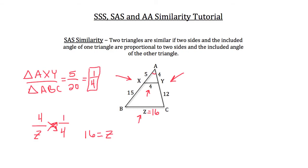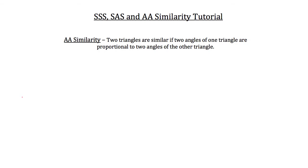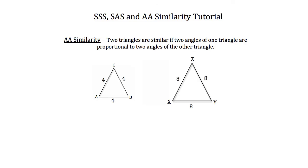Now let's look at Angle-Angle similarity. Angle-Angle similarity states that two triangles are similar if two angles of one triangle are equal in measure to two angles of the other triangle. Here we have triangles ABC and XYZ. Both are equilateral triangles, since all three sides of each triangle are equal in length. Equilateral triangles are also equiangular, meaning all interior angles measure 60 degrees. Since both triangles have two angles of the same measure, Angle-Angle similarity confirms they are similar. You could also use Side-Side-Side similarity to prove these two triangles congruent.